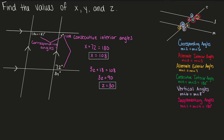Lastly, notice that 72 and 3y are supplementary angles, and supplementary angles add up to give us 180. So 72 + 3y = 180, which gives 3y = 108, and y equals 36.